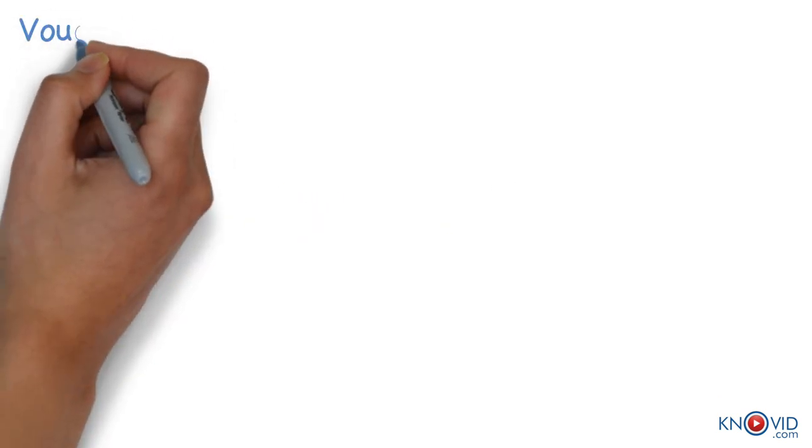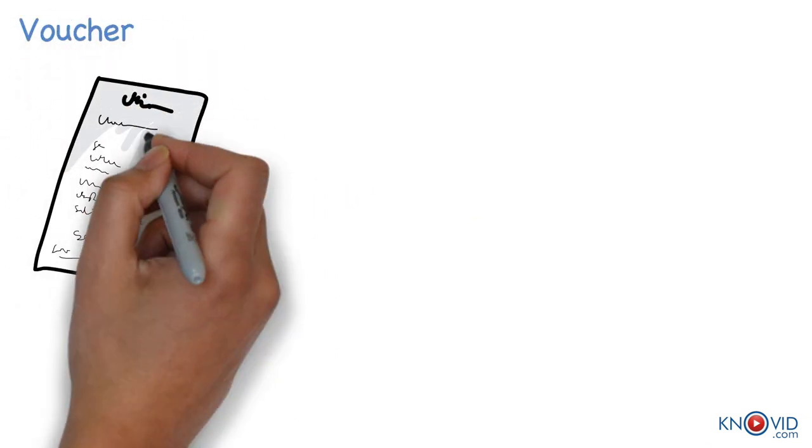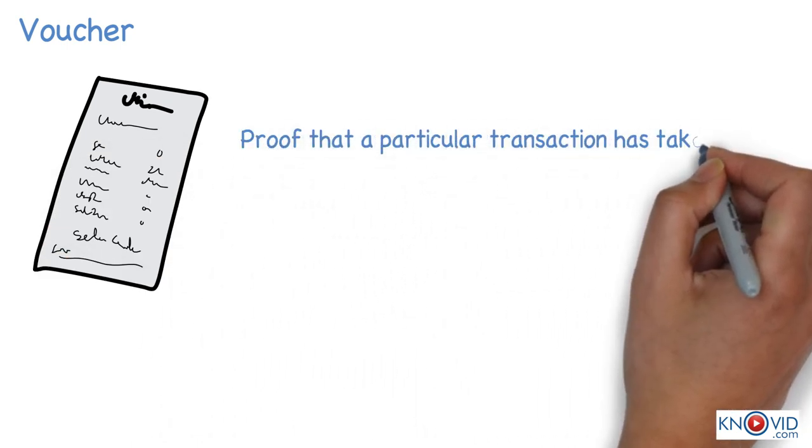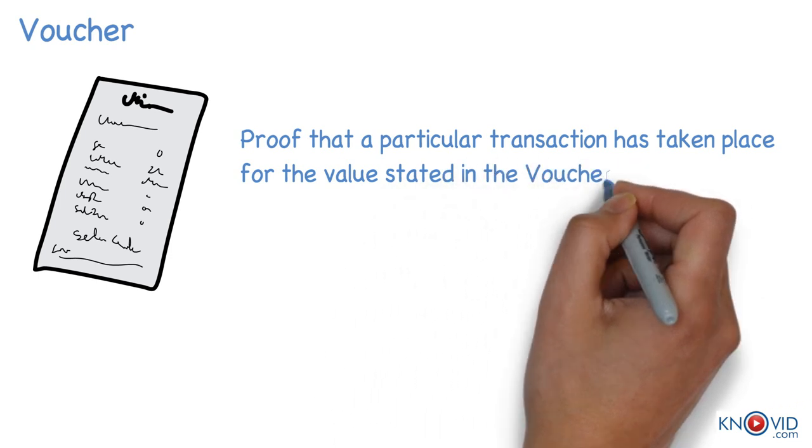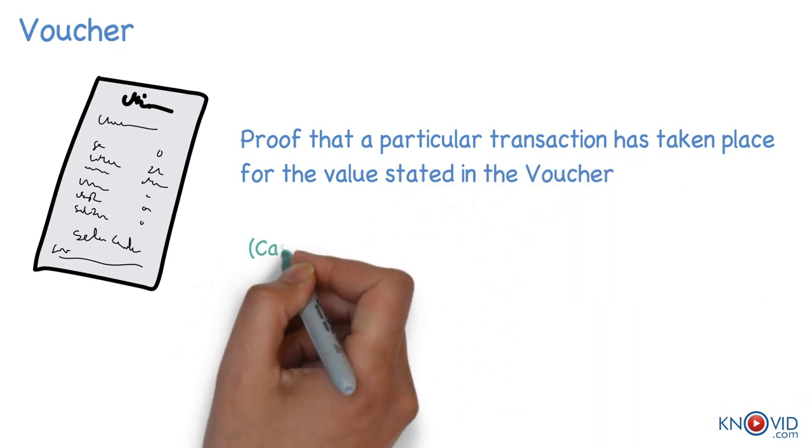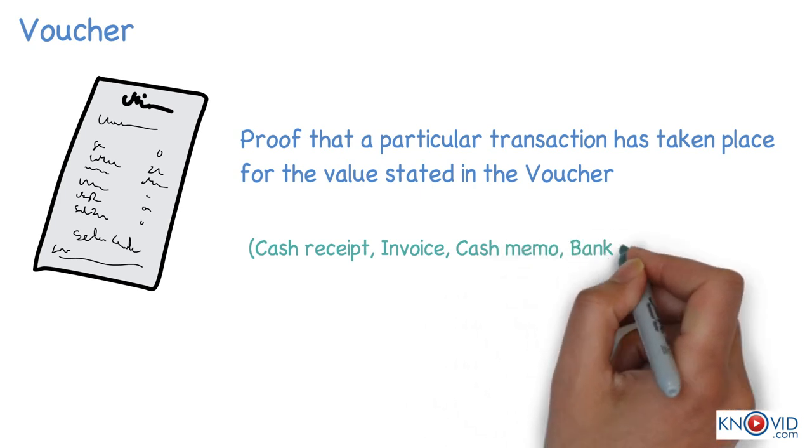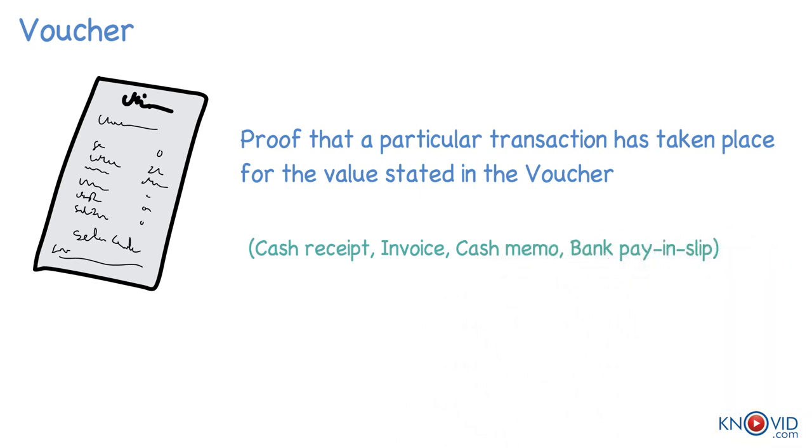Voucher is a written document in support of a transaction. It is a proof that a particular transaction has taken place for the value stated in the voucher. It may be in the form of cash receipt, invoice, cash memo, bank pay-in slip, etc. Voucher is necessary to audit the accounts.